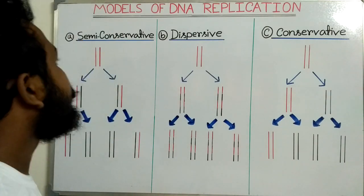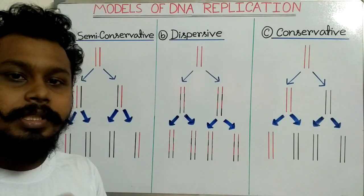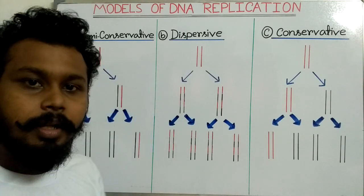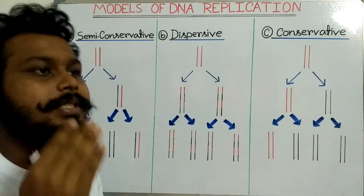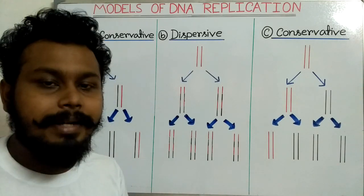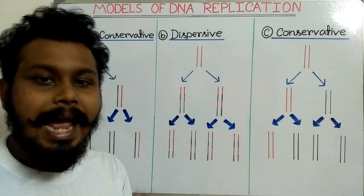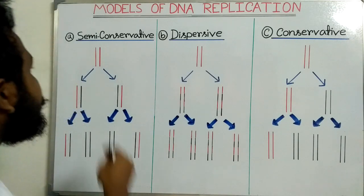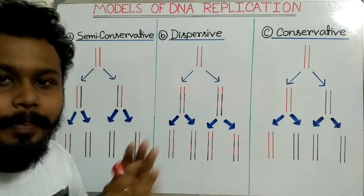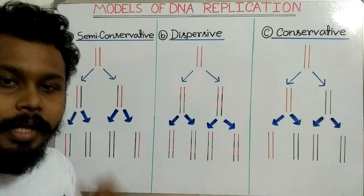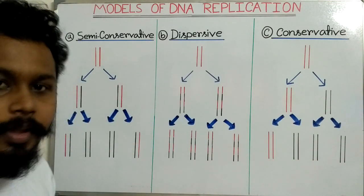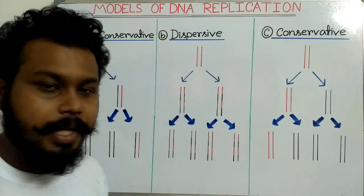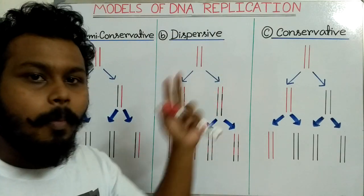Some other scientists didn't agree with the semi-conservative model of Watson and Crick. Their question was that the DNA molecule is very large and the strands are coiled or tangled with each other very tightly, so how could the whole DNA molecule separate and act as a template to make new DNA molecules? They predicted another model of DNA replication called the dispersive model.